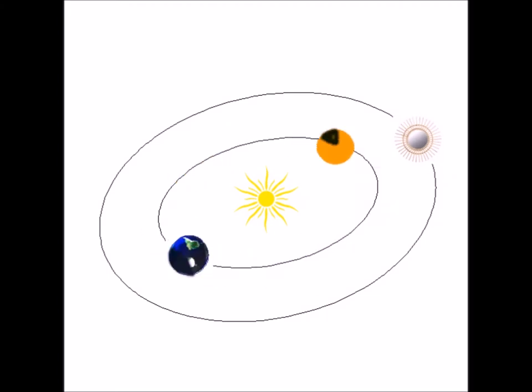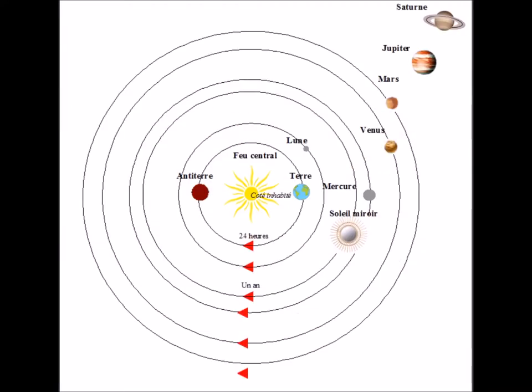This central fire is located on the side of the antipods, part uninhabitable. The earth thus always presented its face towards the central fire, as the moon always presents us the same face. The central fire is therefore invisible from the earth.